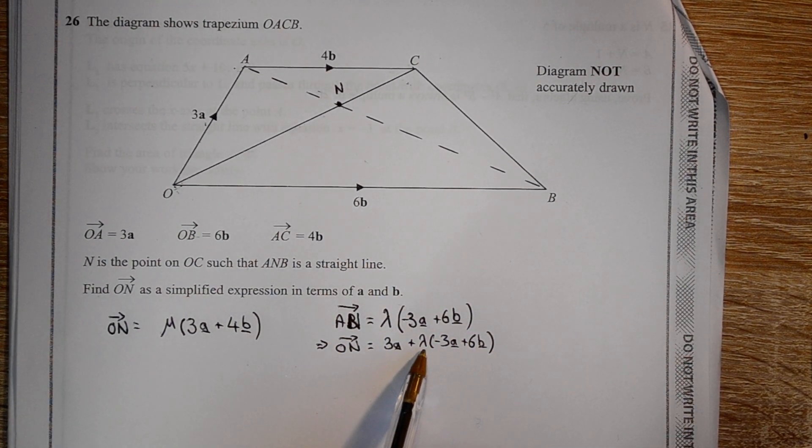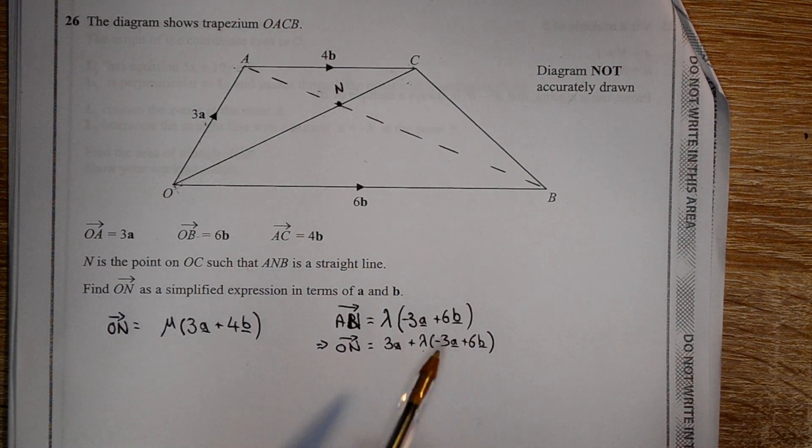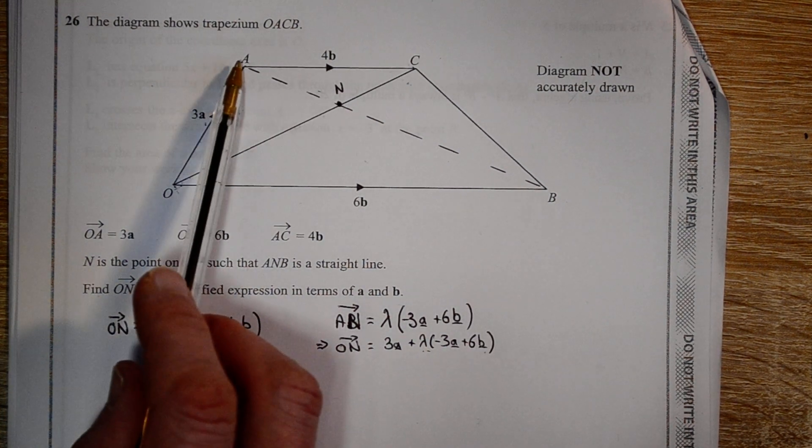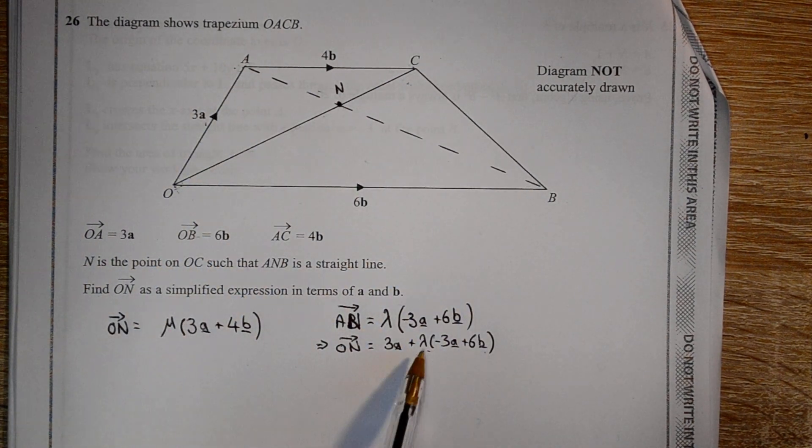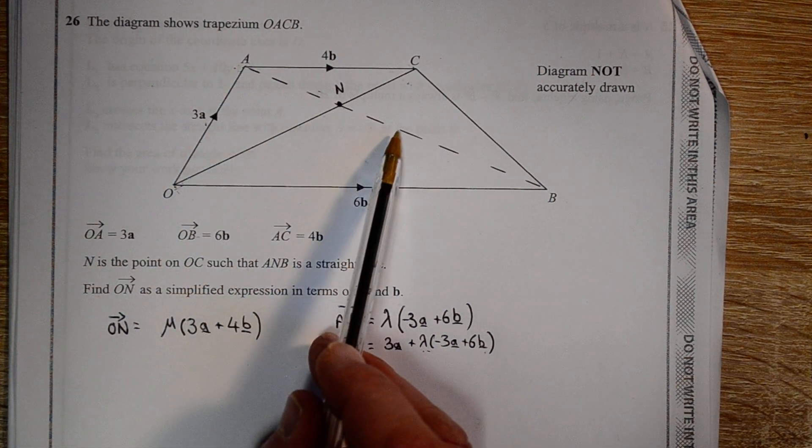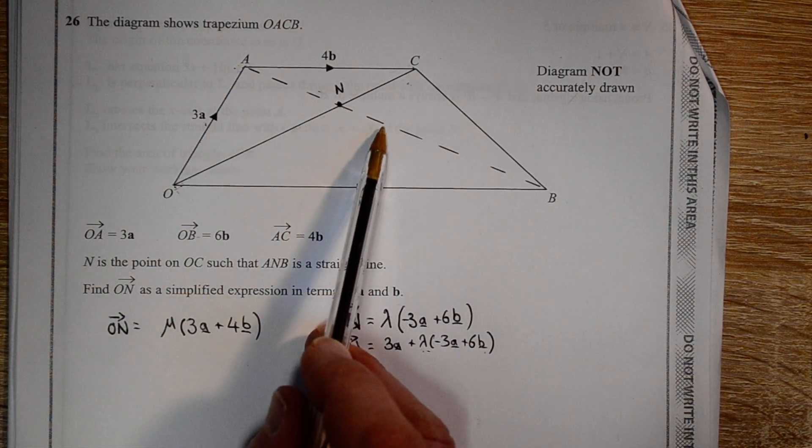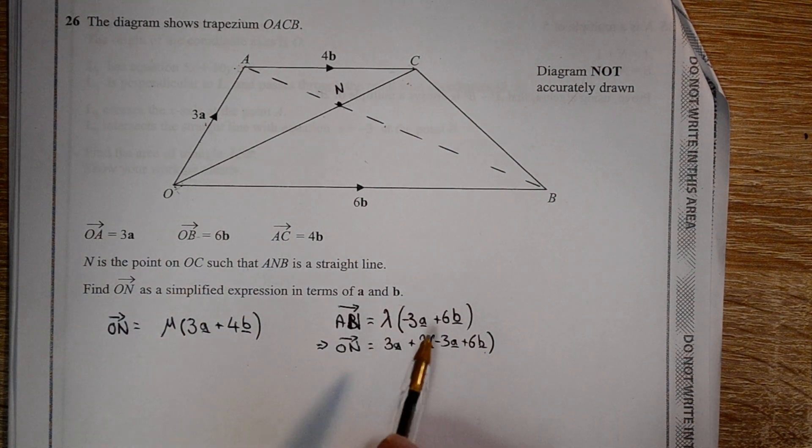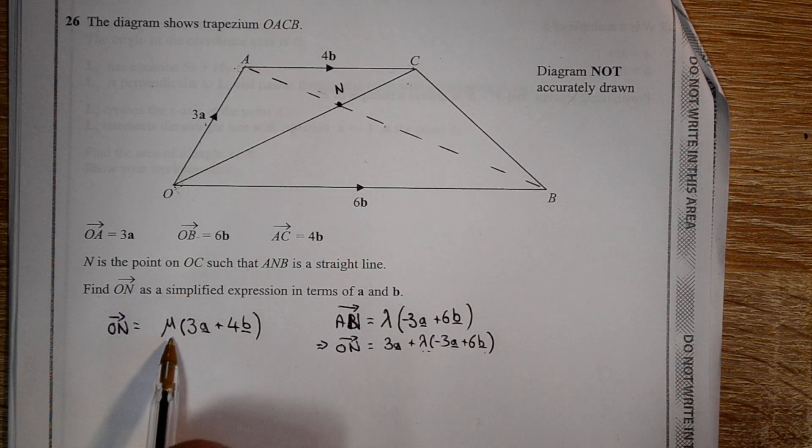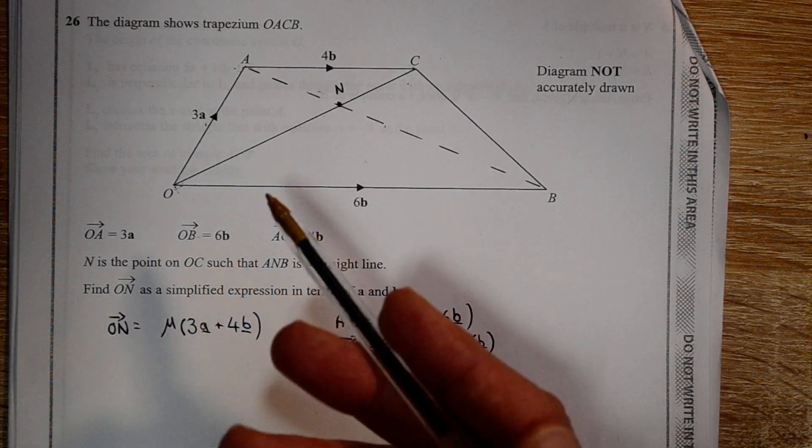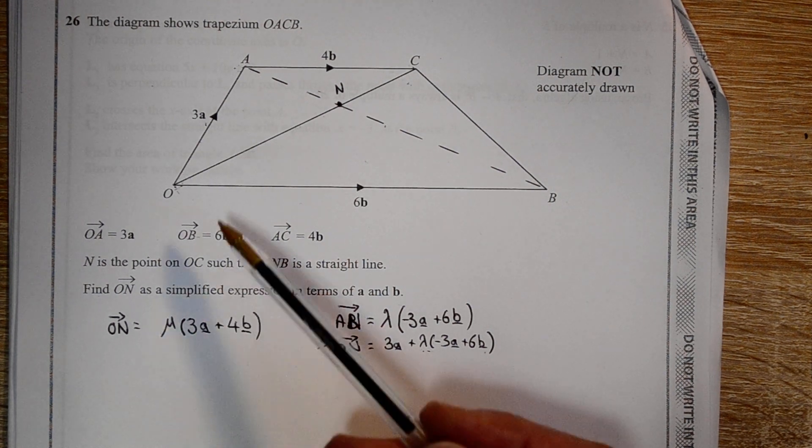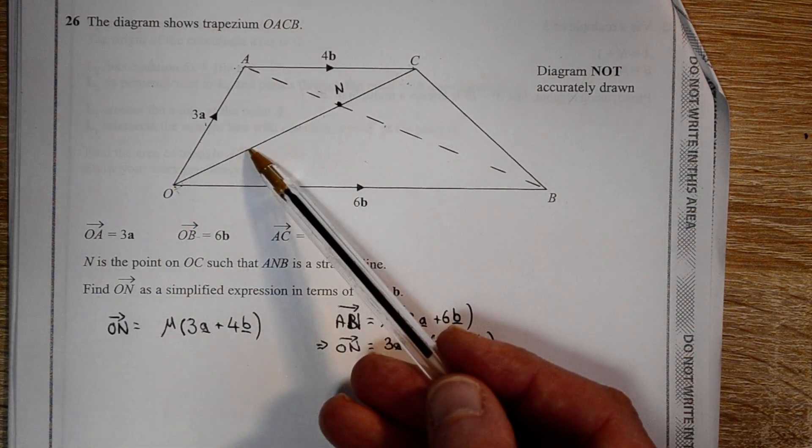We know whatever lambda is, it will take us along this vector to some point on the line AB. If lambda was half, it would take us halfway along from A to B. It looks like N is less than half, doesn't it? We don't know what the fraction is, but lambda will represent that unknown. Similarly with the Greek letter mu, that's some fraction along here. If mu was a quarter, then that would take us from O to a quarter of the way along this line.